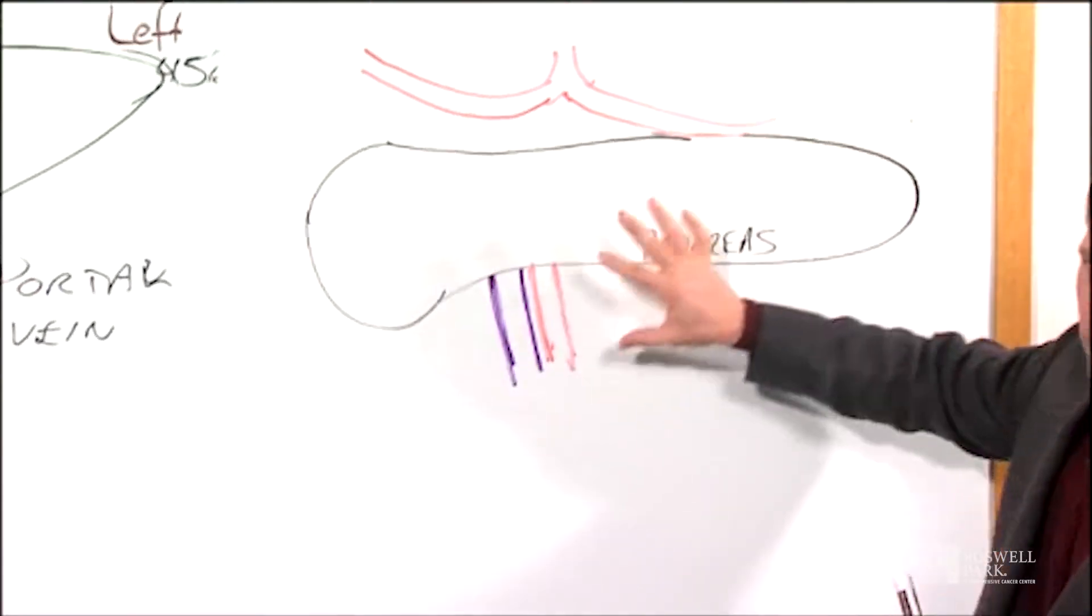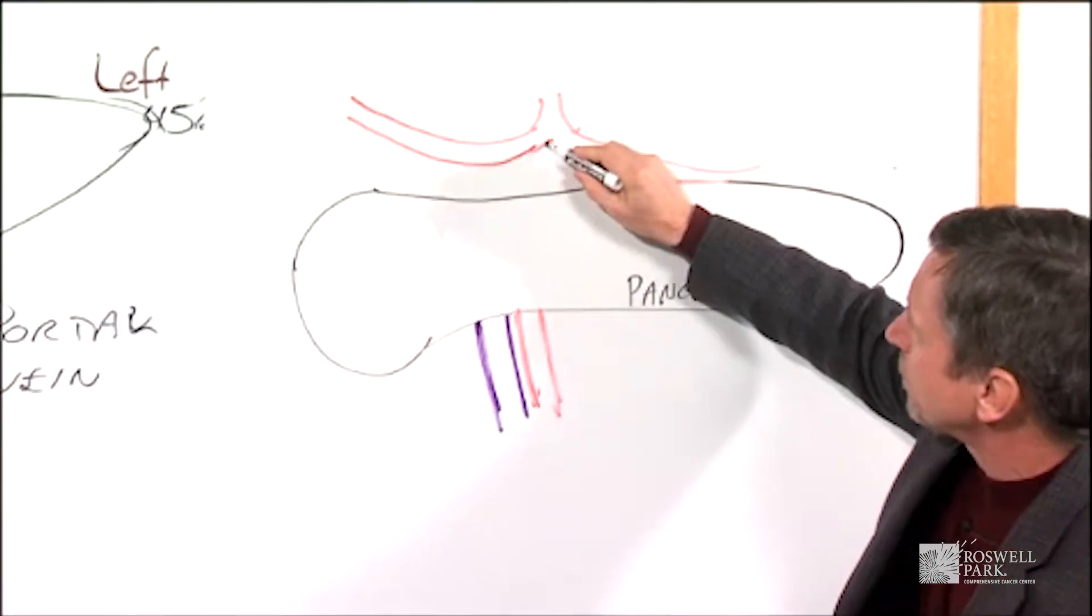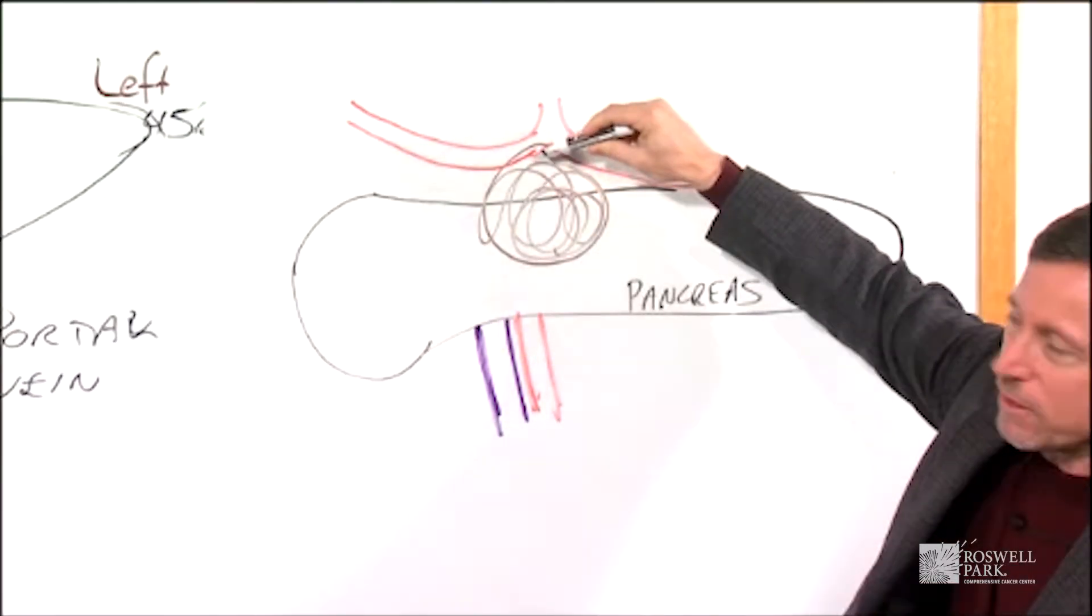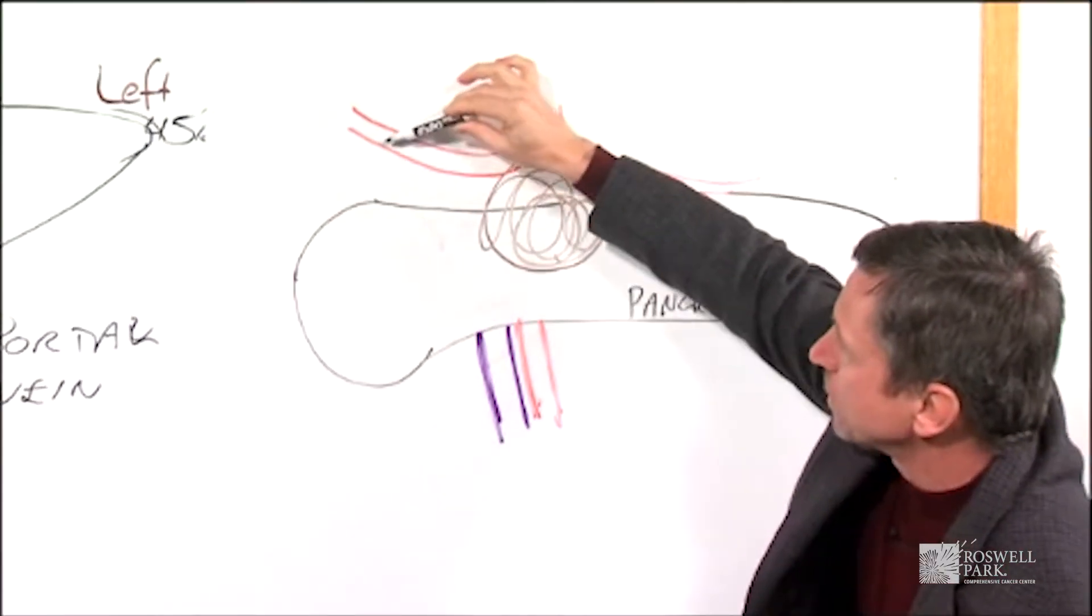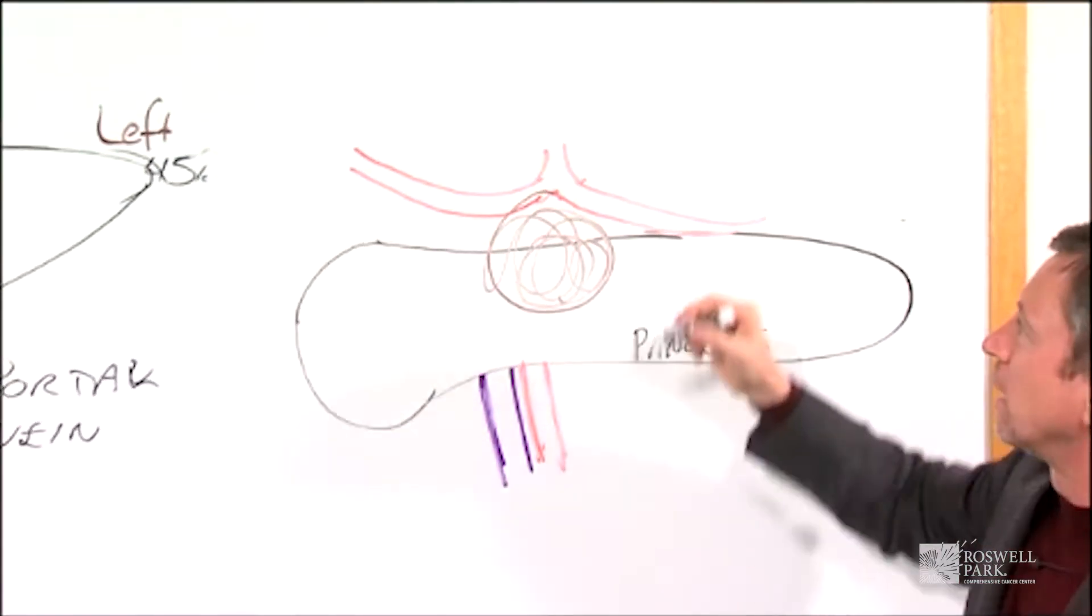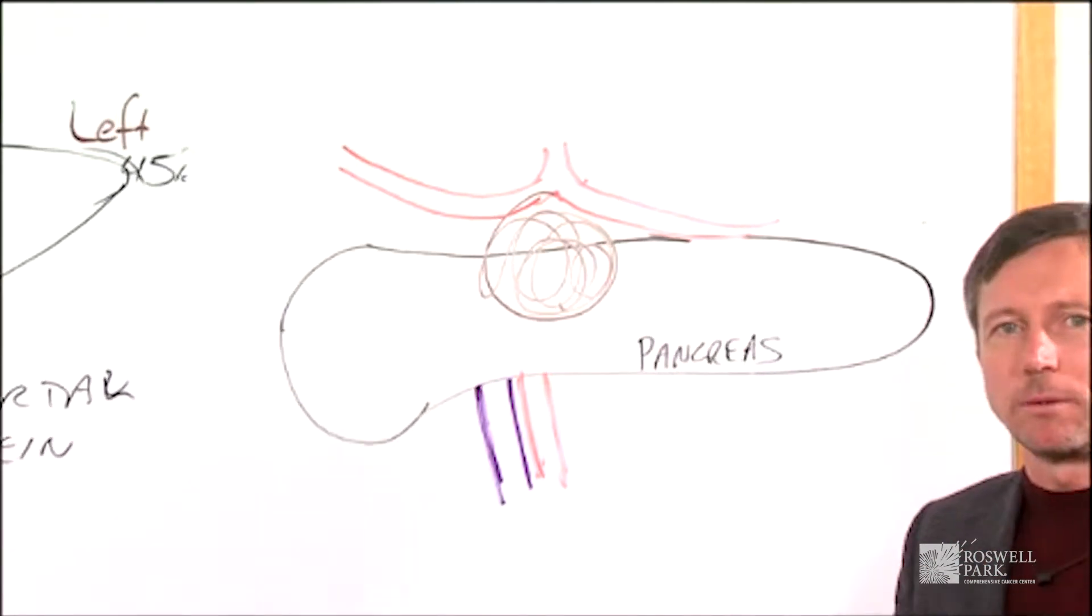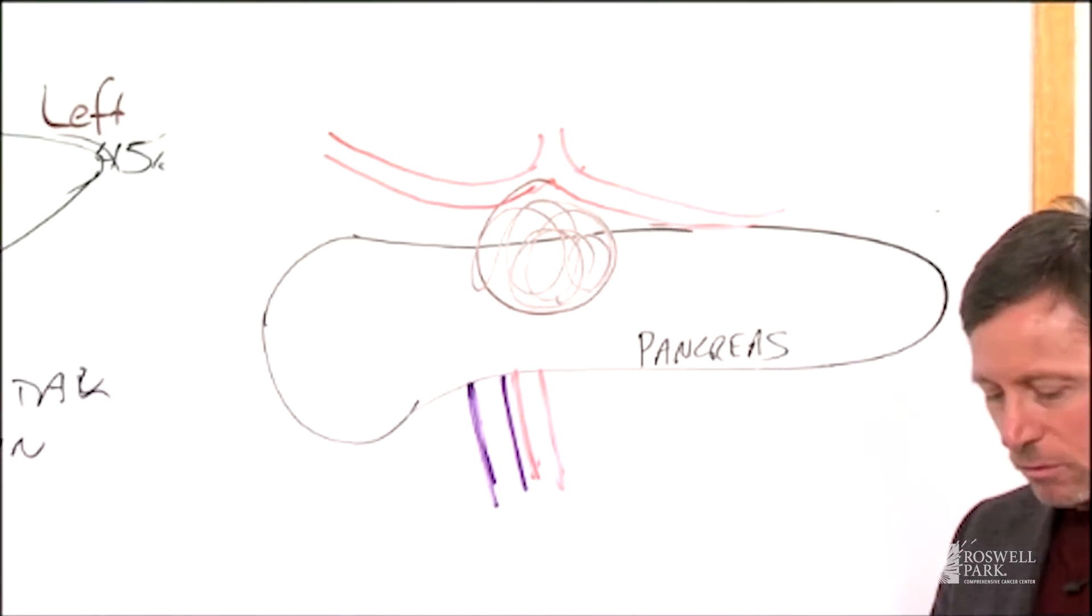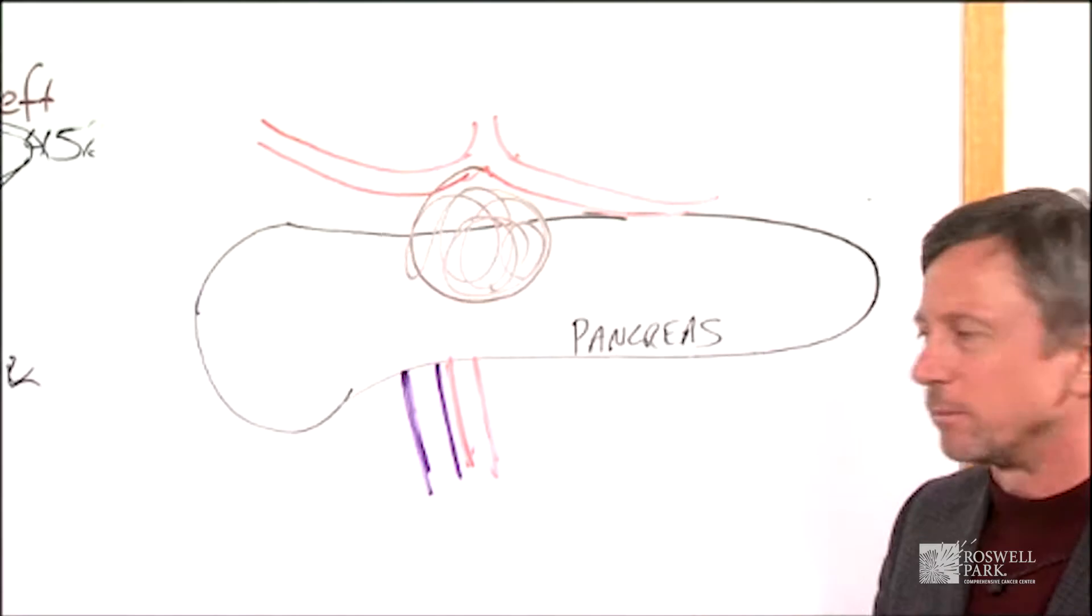I have a diagram here of the pancreas. For example, if there is a tumor in the pancreas that is involving some major blood vessels, this is a picture of the artery that goes to the liver called the hepatic artery. This is something called the celiac trunk, which is the artery that sends all the blood flow to all of the upper abdominal organs. If the tumor is involving this artery, then that tumor would be considered unresectable because we're unable to get the tumor completely out.